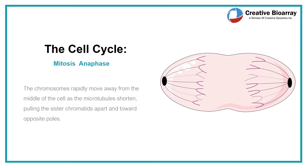Once the centromere separates and the sister chromatids are detached from each other, the cell then enters anaphase. In anaphase, the chromosomes rapidly move away from the middle of the cell as the microtubules shorten, pulling the sister chromatids apart and toward opposite poles. Once the sister chromatids separate, we call each a chromosome.